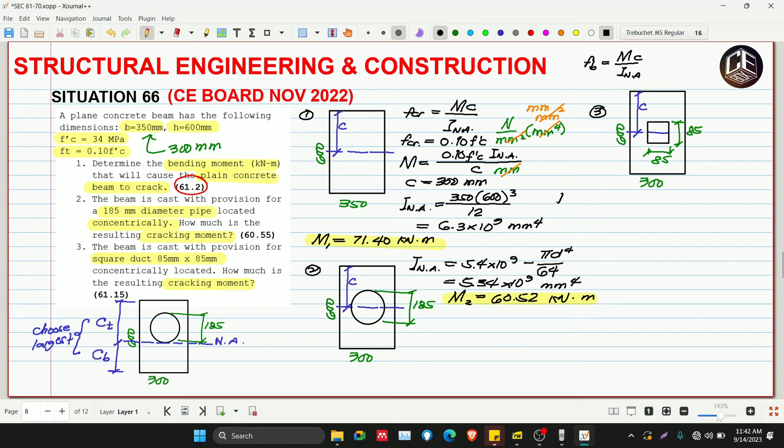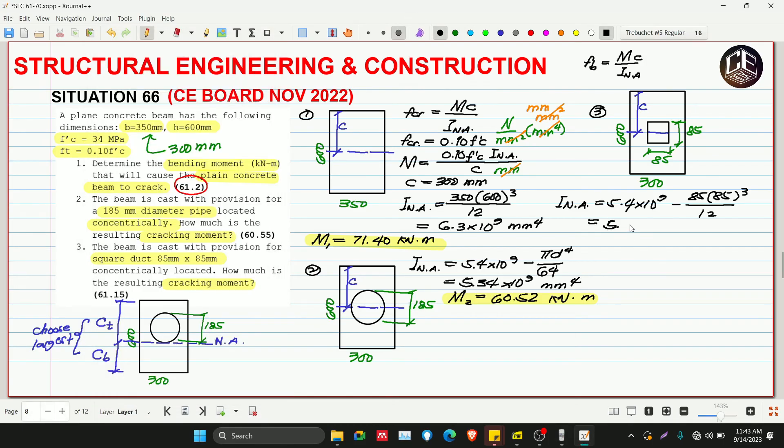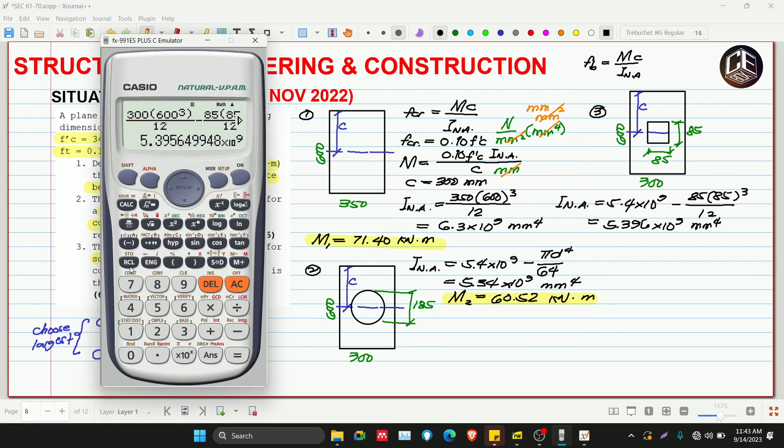The square duct is concentric, so it's 85 by 85. We'll get the INA again. INA is equivalent to 5.4 times 10 raised to 9 minus BH cubed over 12. Our base is 85 and height is 85. 85 times 85 cubed over 12. This is 5.396 times 10 raised to 9 millimeter to the fourth. We can store this in the calculator to keep more decimal places.